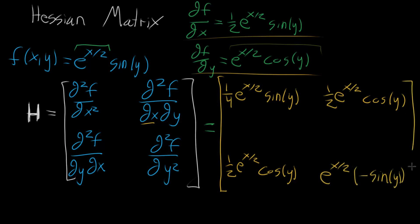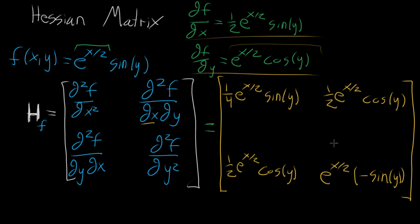So this whole thing — a matrix, each of whose components is a multivariable function — is the Hessian. This is the Hessian of f, sometimes written specifying what function it's of. You can think of it as a matrix-valued function: plug in values for x and y, and you get a matrix.